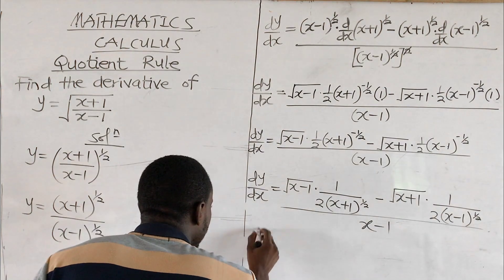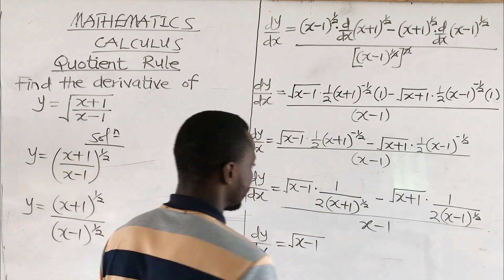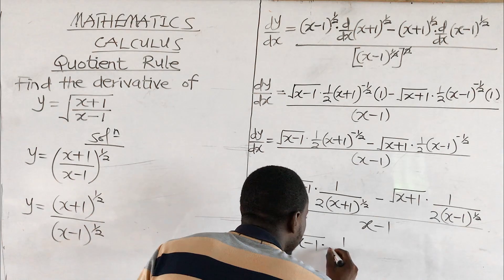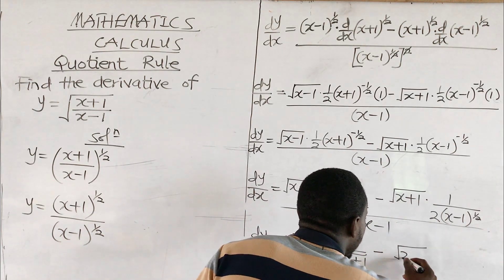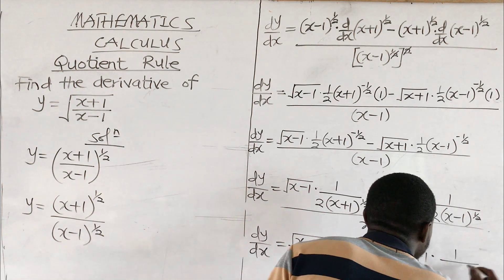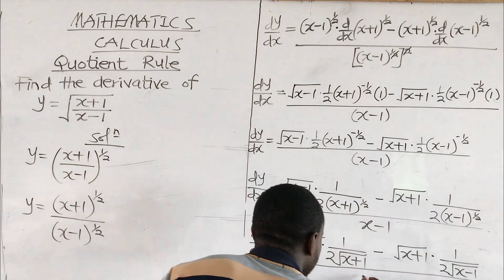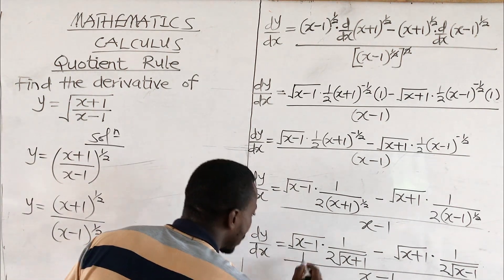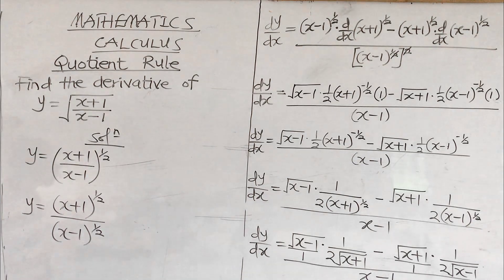So dy over dx is equal to: root of (x minus 1), then over here (x plus 1) to the power half is the same as 1 over 2 root of (x plus 1), minus root of (x plus 1) multiplying 1 over 2 root of (x minus 1), all over the denominator x minus 1. We need to multiply each term by the fraction, and since each whole expression is over 1, we can continue with the multiplication.